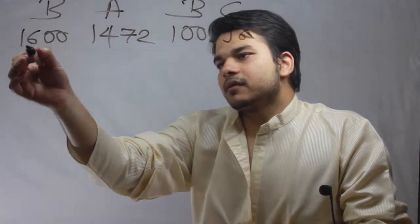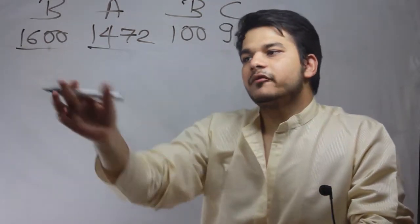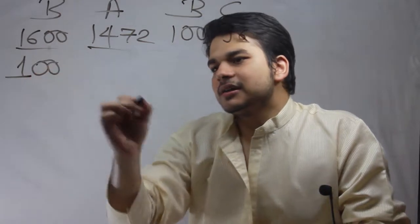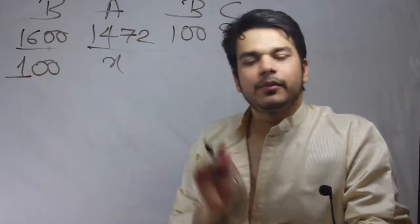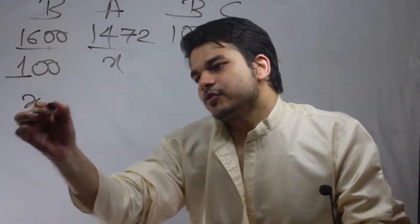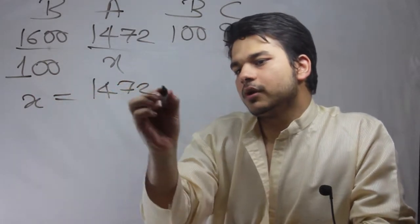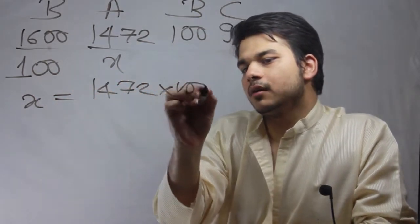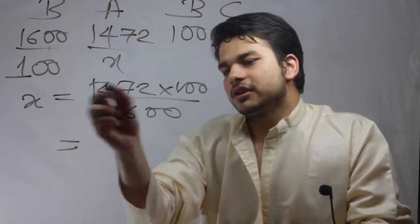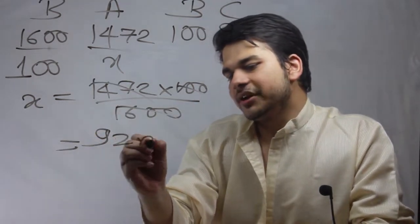So if this is the condition in a 1-mile race, what will be the result in a 100-meter race? X will be equal to 1472 into 100 upon 1600, which equals 92 meters.